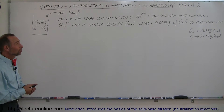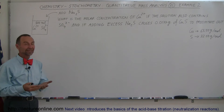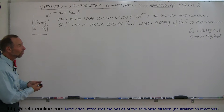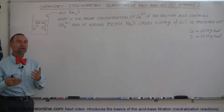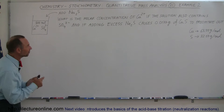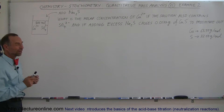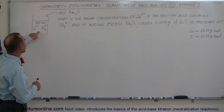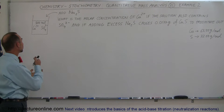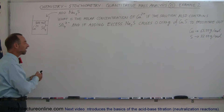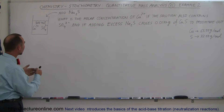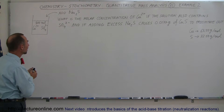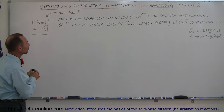Here's our next example of how to use quantitative math analysis to determine what the molar concentration is. In this case, we have an example where we're trying to determine the molar concentration of a solution that contains copper ions and sulfate ions. We put copper sulfate into a solution, it dissociates, and now we have it as an ionic solution.